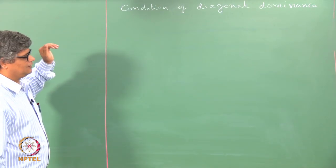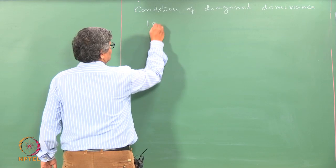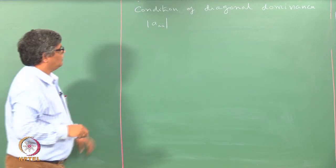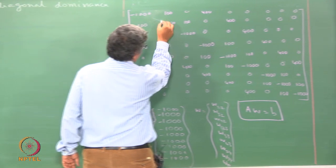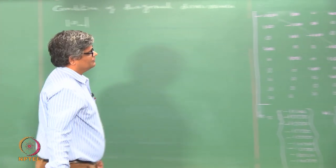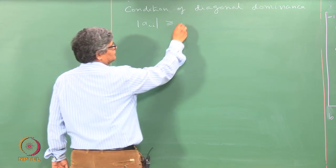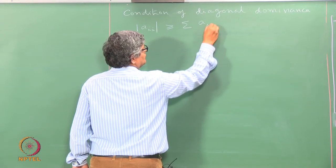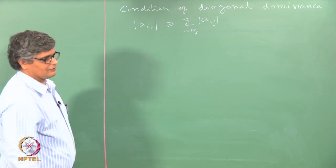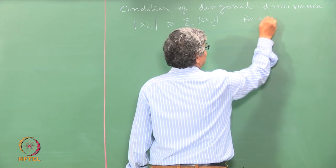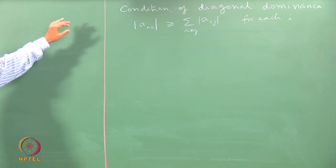When you have this set of equations, we define diagonal dominance as a condition where the modulus of the diagonal term in the matrix is greater than or equal to the sum of the moduli of all other terms in that row — that is, for all i not equal to j. This must be satisfied for each i. Once we have this condition satisfied, we can claim diagonal dominance.